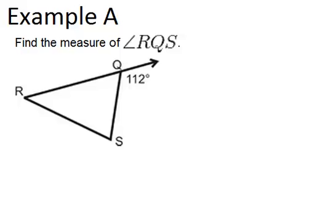Now in example A, it says find the measure of angle RQS. So angle RQS will be right here, and we notice that we have an exterior angle marked, so the 112 degree angle is an exterior angle to that triangle.